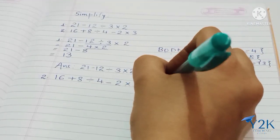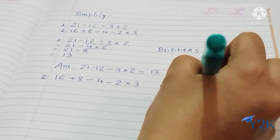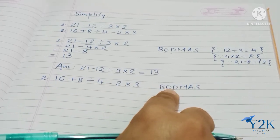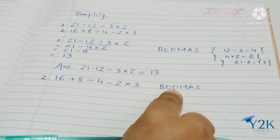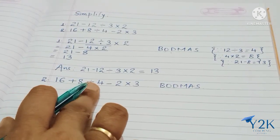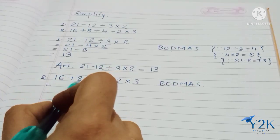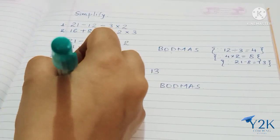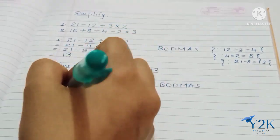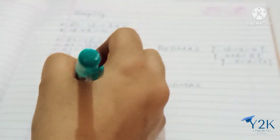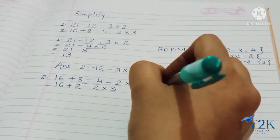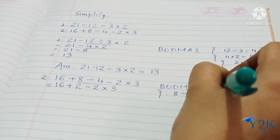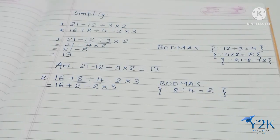Again, if you want, you can write BODMAS on the side. According to this rule, again in this sum there are no brackets, so the bracket open step will not come. Directly it will come to division. The division operation is between 8 and 4, so we solve that first. It becomes 16 plus 8 divided by 4, giving 2, minus 2 into 3. You can mention that 8 divided by 4 gives you 2.